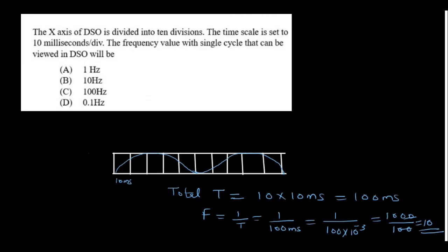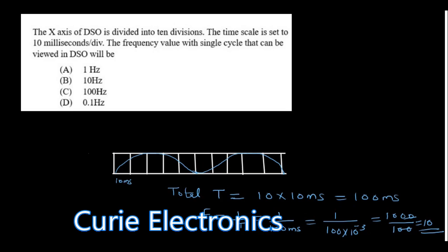The x-axis of DSO—Digital Storage Oscilloscope—is divided into 10 divisions. The time scale is set to 10 milliseconds per division. The frequency value with single cycle that can be viewed in DSO will be: the x-axis is divided into 10 divisions and each division corresponds to 10 milliseconds. That means the total time period is 100 milliseconds. One sine wave is occupying this 100 milliseconds. Actually the drawing is wrong, let me correct it.